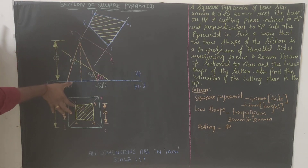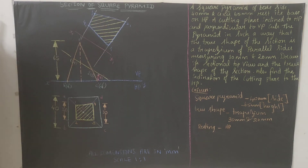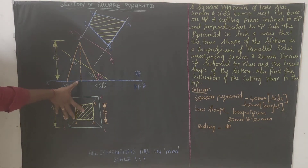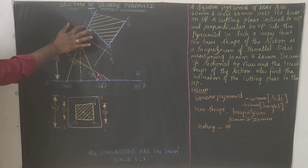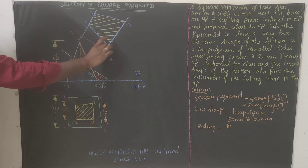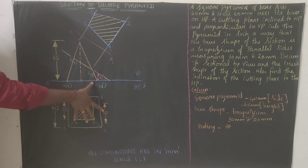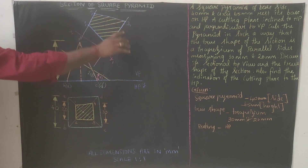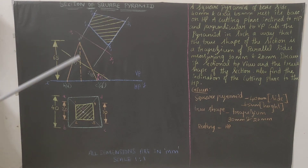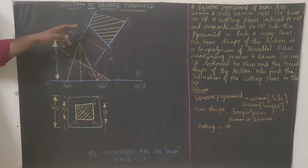Measure the distance from the reference line to point 2; use the same distance to mark point 2-1 on the corresponding extension. Similarly, measure from the reference line to point 4 and cut an arc to get 4-1; measure to point 3 to get 3-1. We now have four points: 1-1, 2-1, 3-1, and 4-1. Join all these points to get the trapezium — the true shape of the section. Apply hatching at 45 degrees with equal spacing.